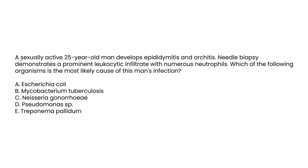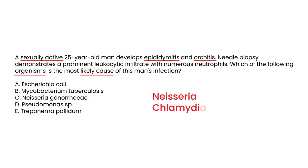Clinical vignette two: A sexually active 25-year-old man develops epididymitis and orchitis. Needle biopsy demonstrates a prominent leukocytic infiltrate with numerous neutrophils. The most likely causative organism — remember, Neisseria gonorrhea and Chlamydia trachomatis are the two main players in sexually transmitted epididymitis. The answer would be Chlamydia trachomatis, choice C.